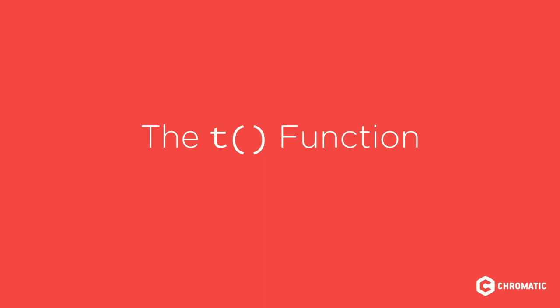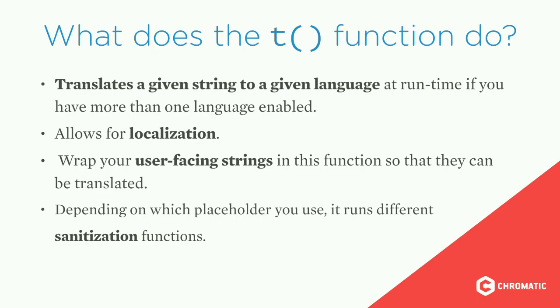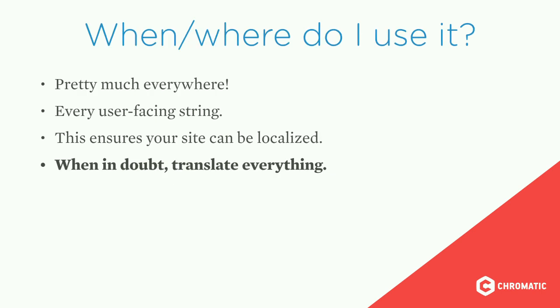The next section covers the translate, or T, function — a very widely used and misused function. It translates a given string to a given language at runtime if you have more than one language enabled, allowing for localization. You wrap all of your user-facing strings in this function so that they can be translated. When in doubt, translate everything. Two years later when you're trying to find a string showing up untranslated and your stakeholders want it changed, you'll be much happier if it's already ready to translate.